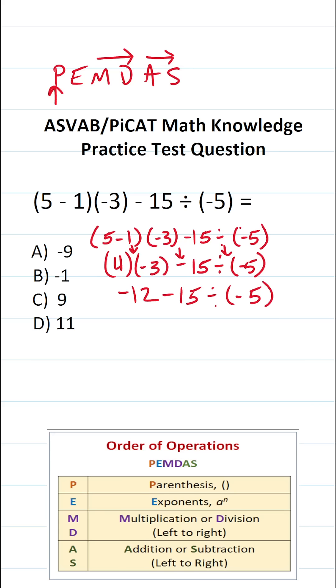We have two operations left, notably subtraction here and division here. We're going to do division before our subtraction. So let's work that out now. And I'm going to read this as negative 15 divided by negative 5. So this becomes negative 12. A negative divided by a negative is going to be a positive. So negative 15 divided by negative 5 is going to be positive 3.